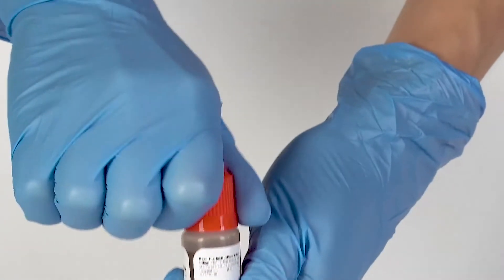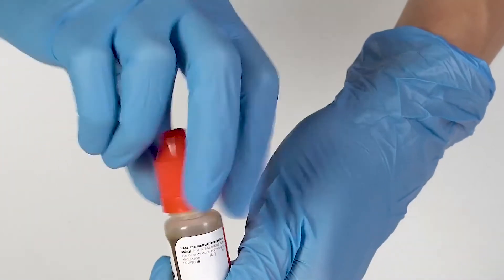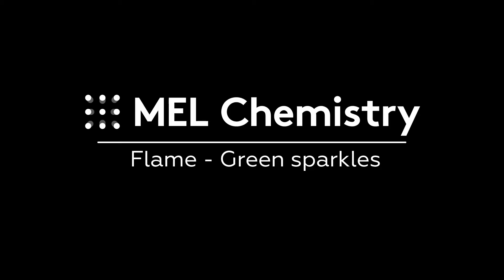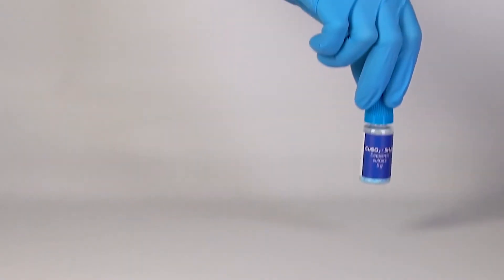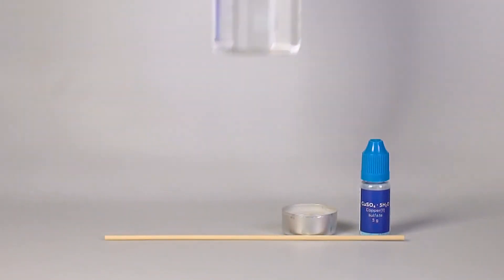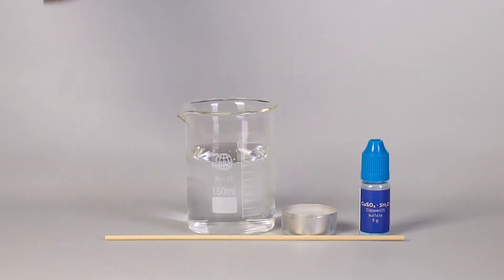To open a bottle containing a reagent, push the cap down and turn it. For the green sparkles experiment, you will need copper sulfate, a candle, a splint, some water in a beaker, and matches.